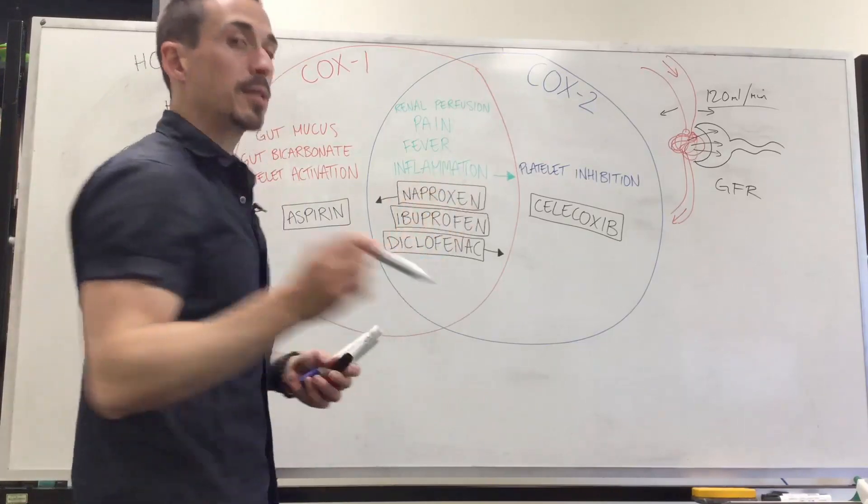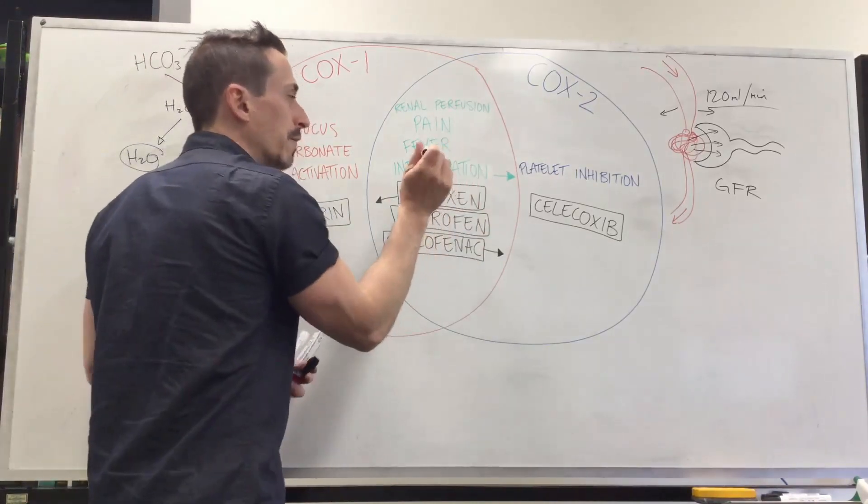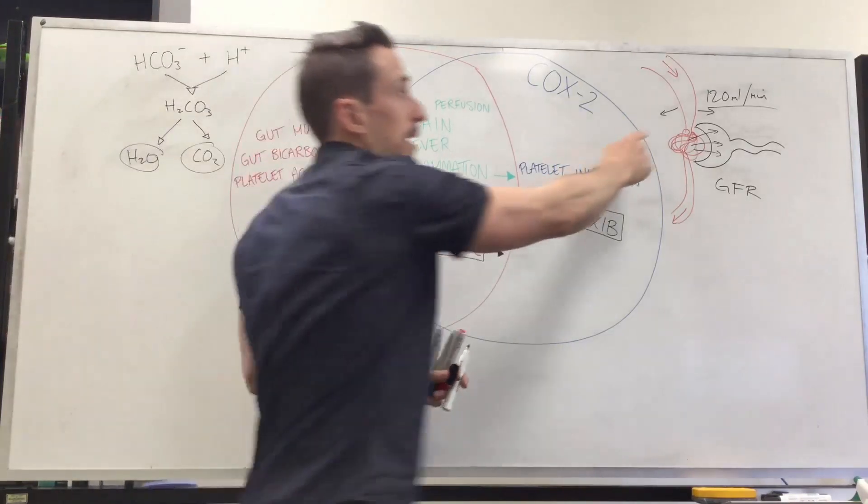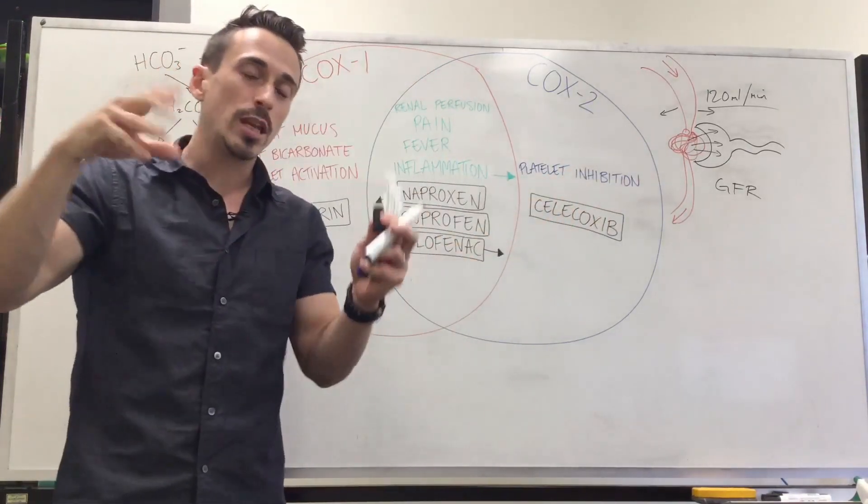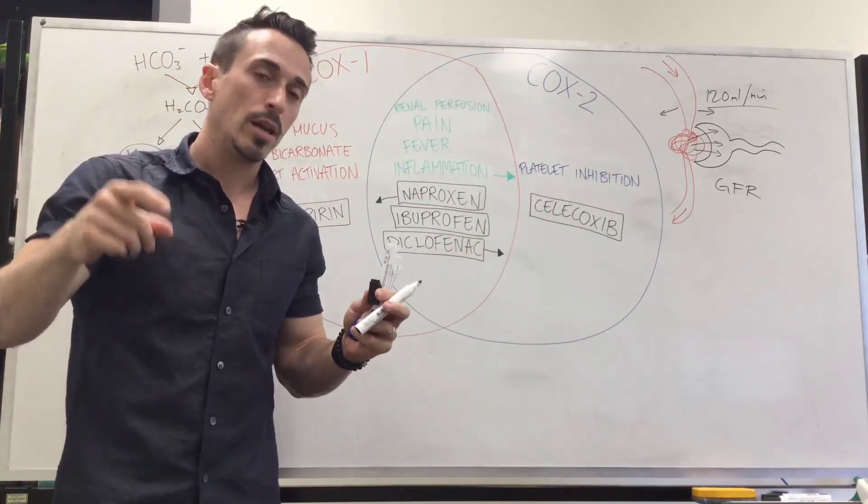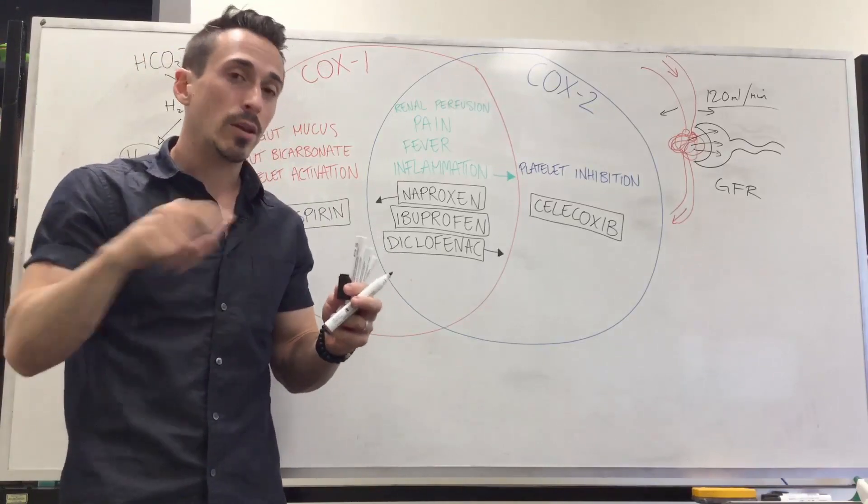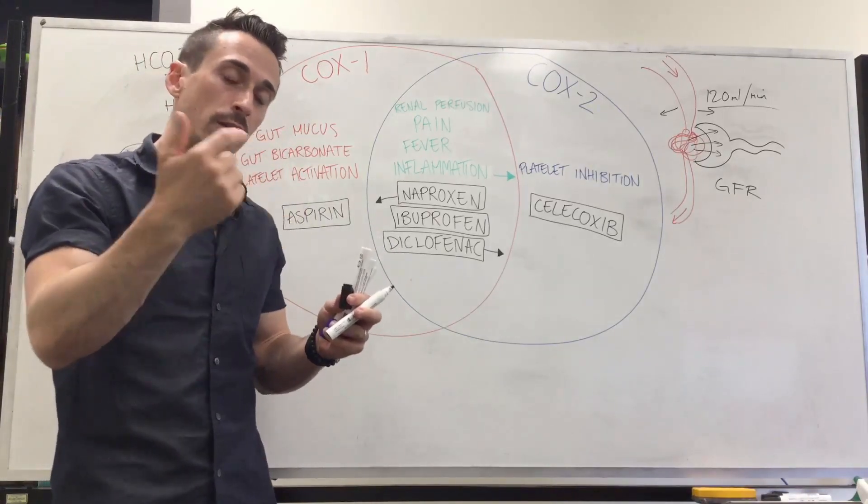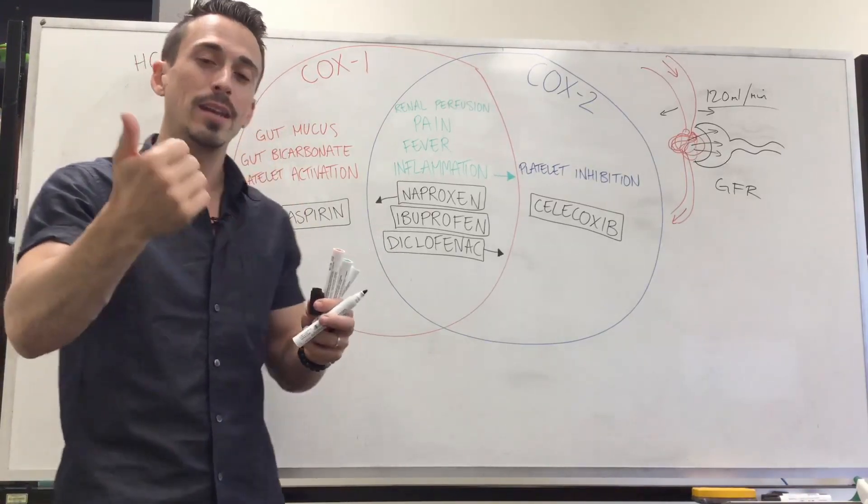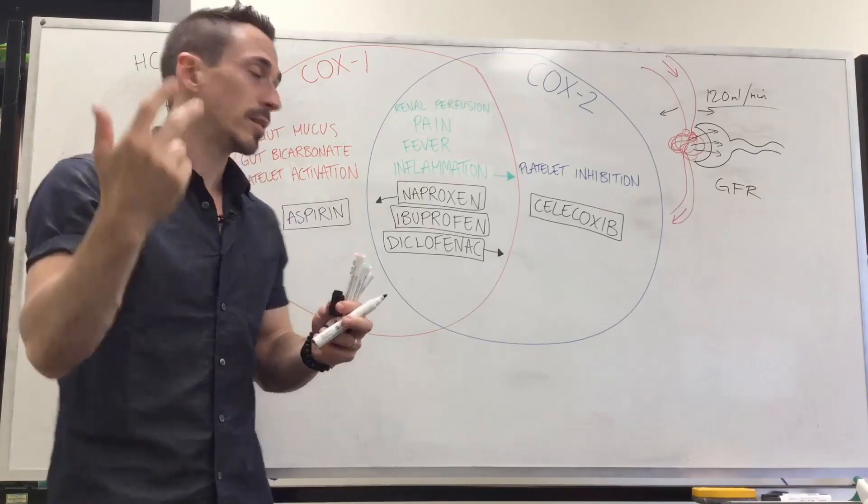And prostaglandins play a really important role in inflammation. So this is vasodilation and capillary permeability. These two things lead to the cardinal signs of inflammation: pain, fever, redness, swelling. So pain, heat, redness, swelling.